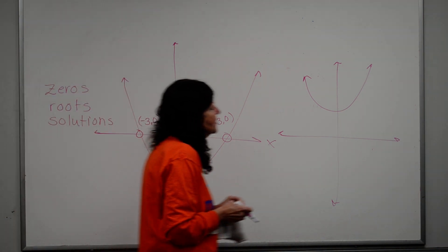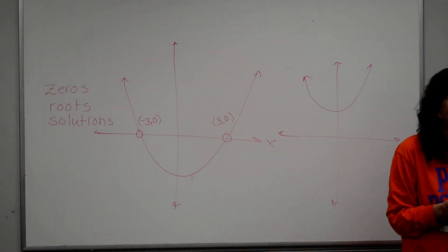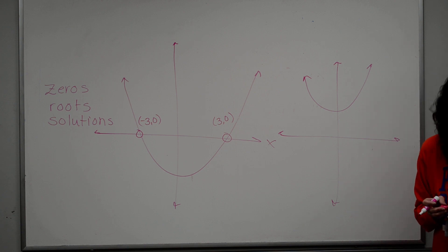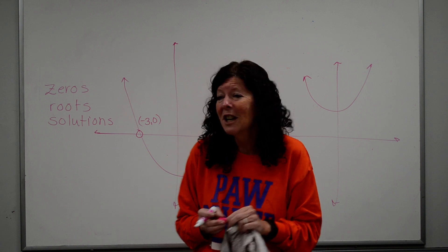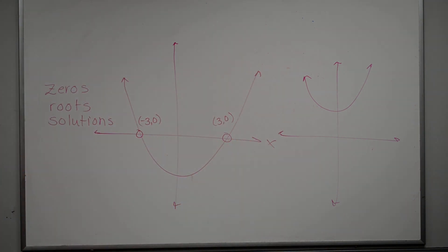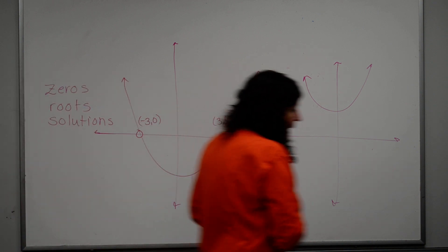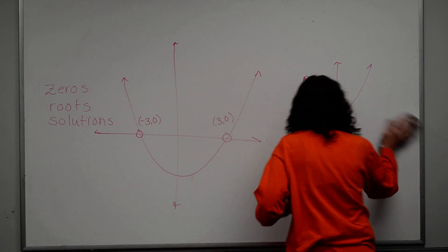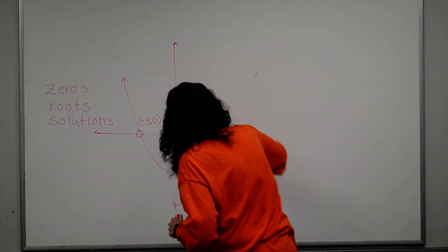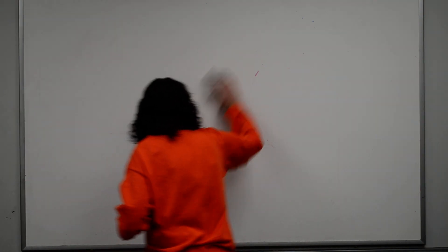The whole goal of this chapter is basically graphing these parabolas and solving them. The first thing we're going to do is solve by graphing, and we're going to cheat a little bit — we're going to use our calculator to help us solve by graphing. We'll graph by hand, but when it comes to finding the solution, meaning where it crosses the x-axis, we'll use the calculator to be more precise.